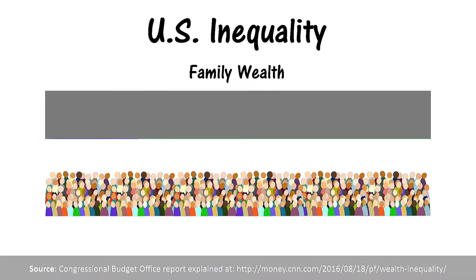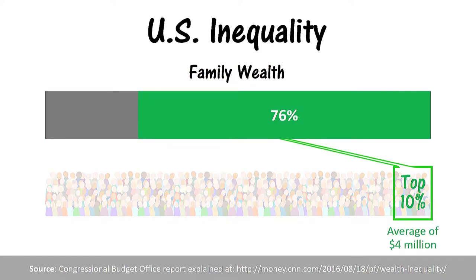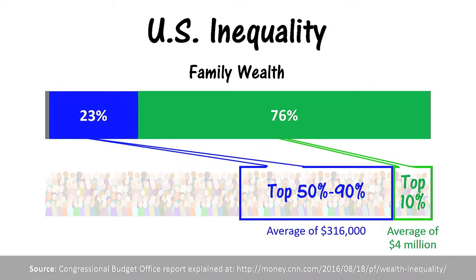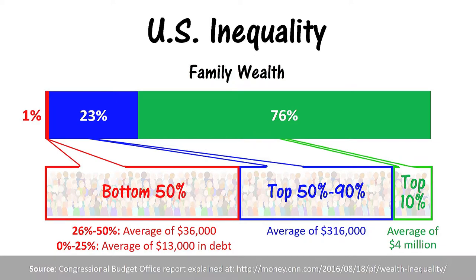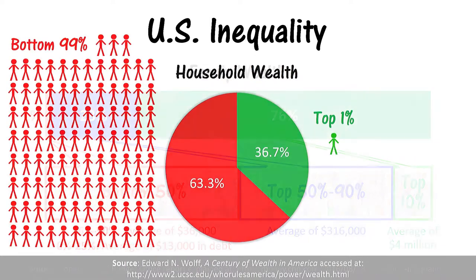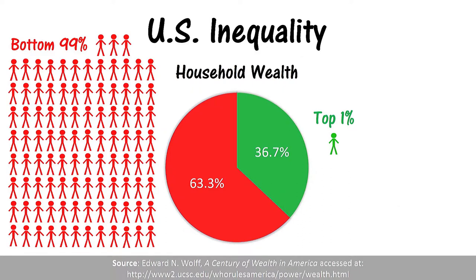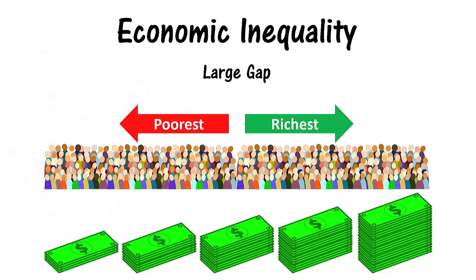In terms of wealth, the Congressional Budget Office found that in 2013 the top 10% of families owned 76% of the wealth, the middle-to-90th percentile range owned 23% of the wealth, and the bottom half of families combined for just 1% of the wealth. The top 1% of households specifically owned 36.7% of the wealth.